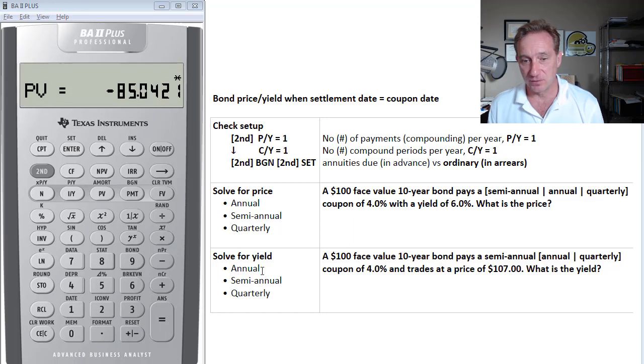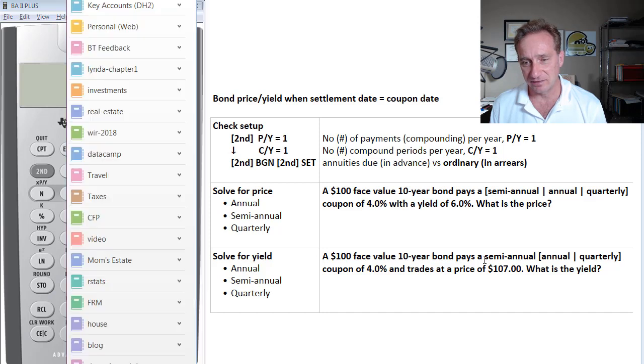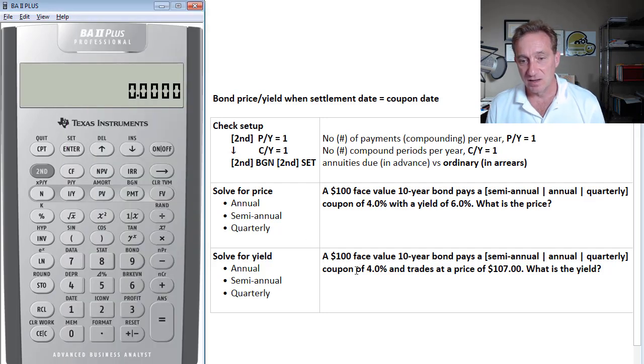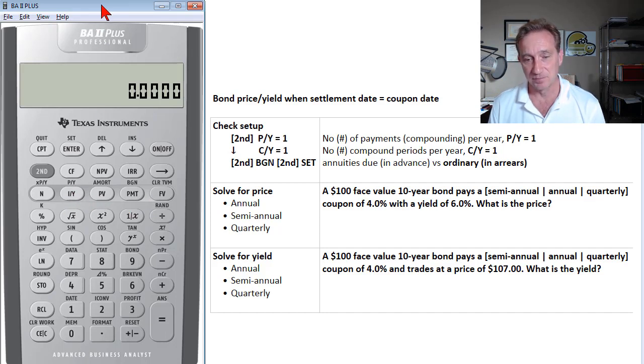And now my problem is only slightly different. A hundred dollar face value, 10 year bond pays a, let's say it's either semi-annual or annual or quarterly. And I'll start with annual, put that back coupon at 4%. And here's the only difference. Now we're told it trades at a price of 107 and we want to solve for the yield. So again, we're generally going to be given four of the five. And this time we're going to be computing for the yield. We want to be mindful of the period.